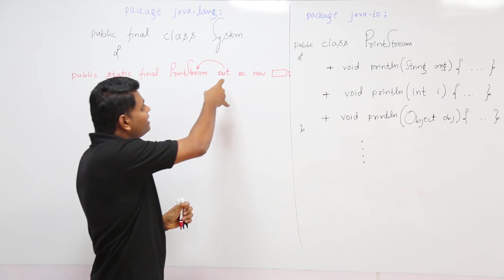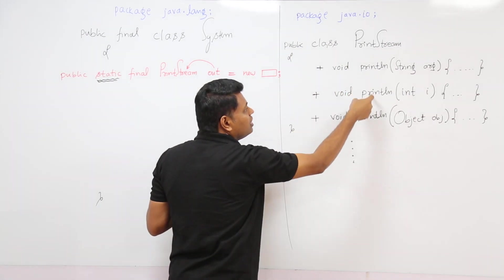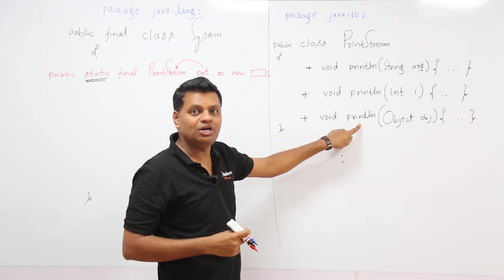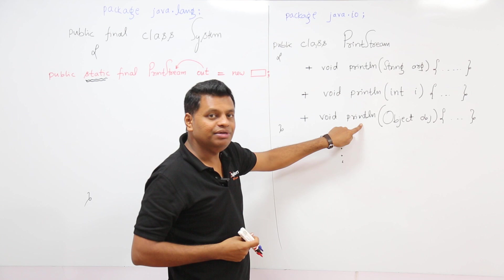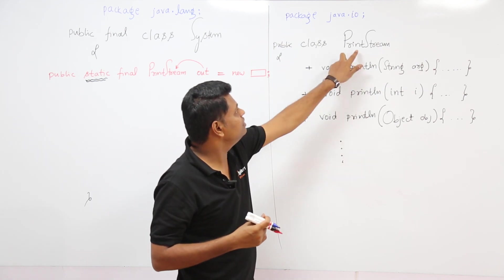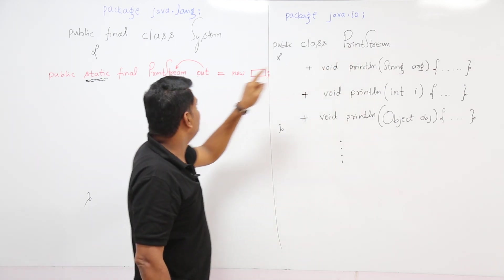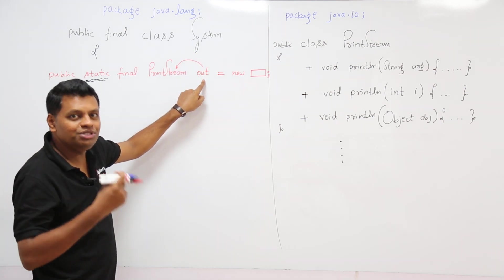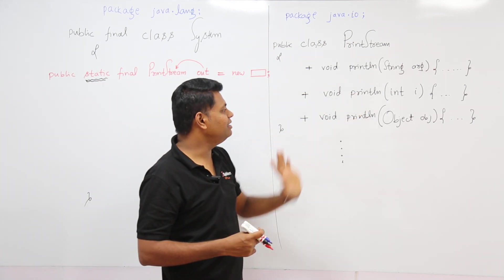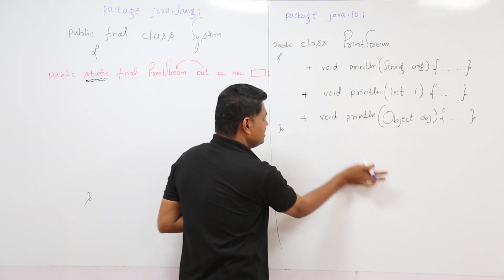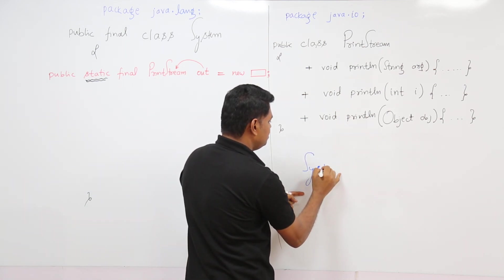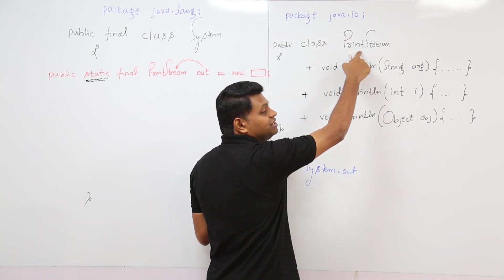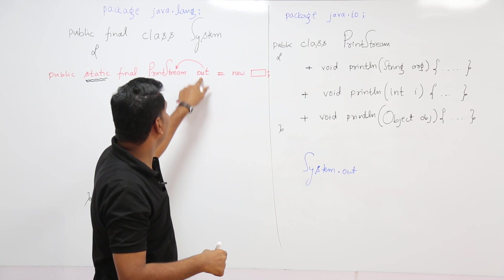When we get the object of PrintStream, we can access all the non-static methods using that object. These print and println methods are non-static, also called instance methods. We access instance methods by creating an object or instance of PrintStream. We get that object from within the System class. So System.out gives you an object of PrintStream, and using that object we call the println method.